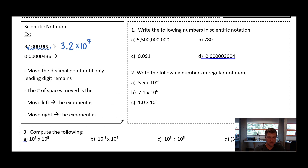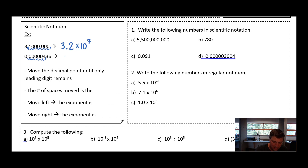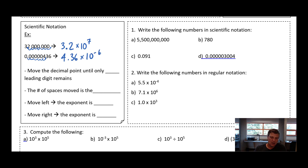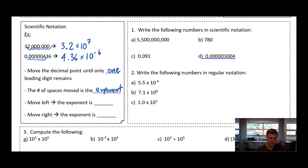The same thing is true if we have really small numbers. Here I've got 0.000000436. I'm going to move the decimal so there's only one leading digit — I move it to the right one, two, three, four, five, six spots — and I can write this as 4.36. I moved it six spaces, but this was a very tiny number to start with, so I'm going to call it 10 to the negative 6. So the rules are: move the decimal until only one leading digit remains. The number of spaces becomes the exponent of your base 10. If you move the decimal to the left because it's a really big number, the exponent is positive. If you move to the right because it's a really small number, the exponent is negative.